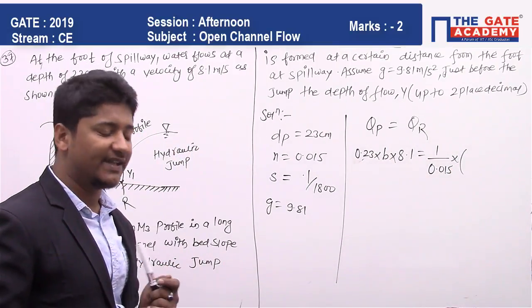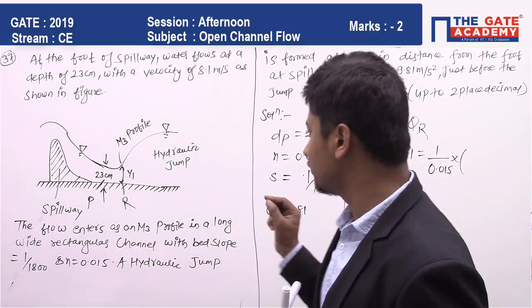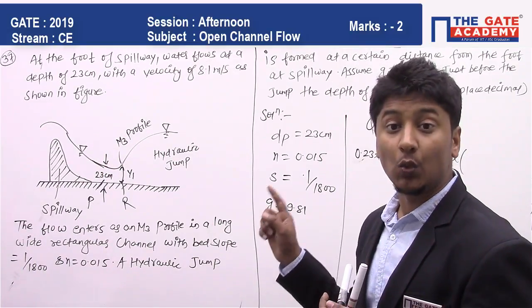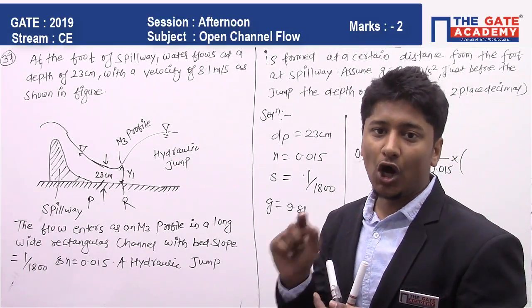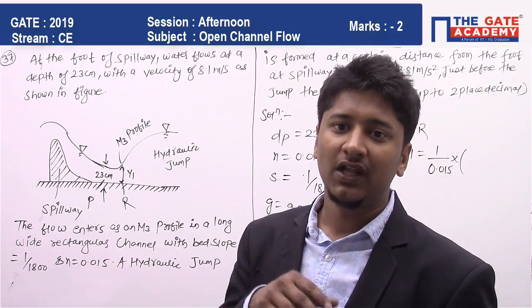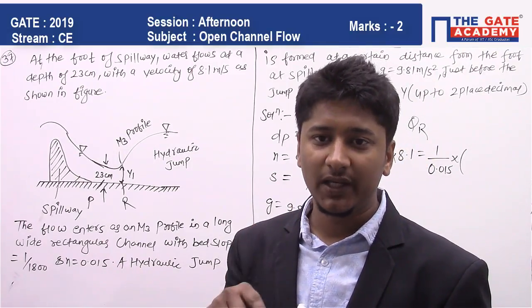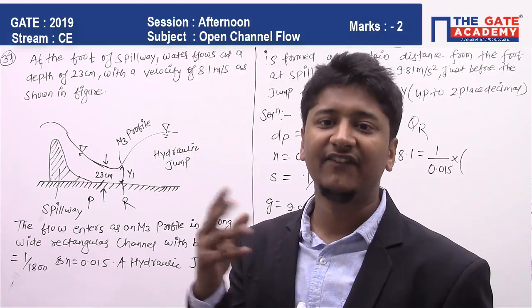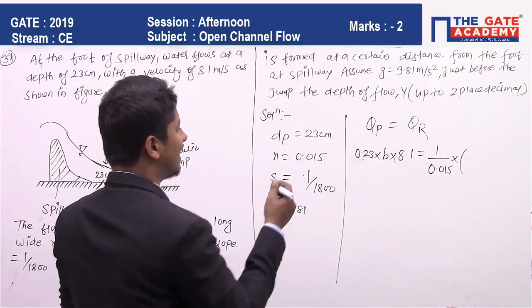If you look at the question, it's given that it's a long wide rectangular channel. For a wide rectangular channel, the hydraulic radius is equal to the depth of flow Y, so R = Y.